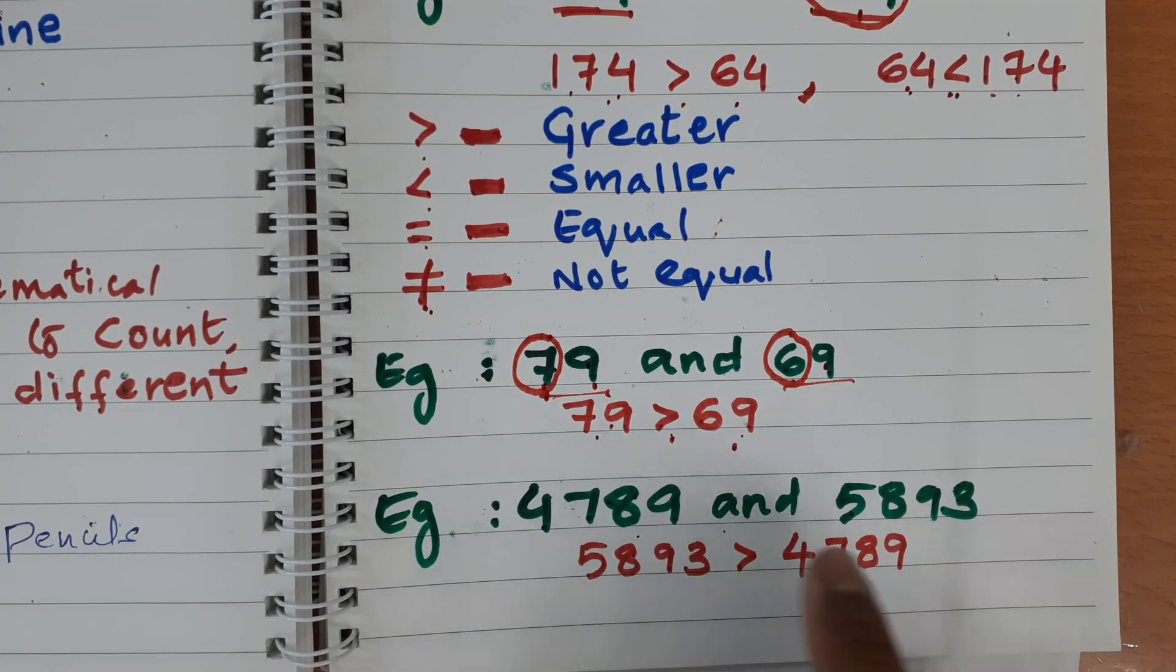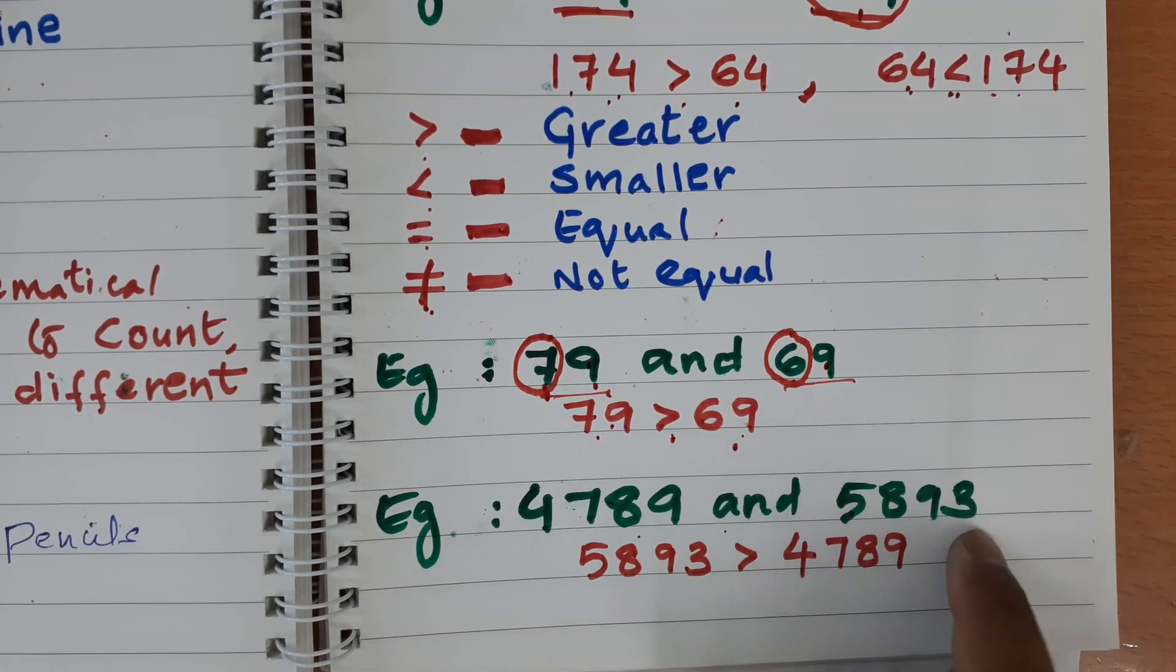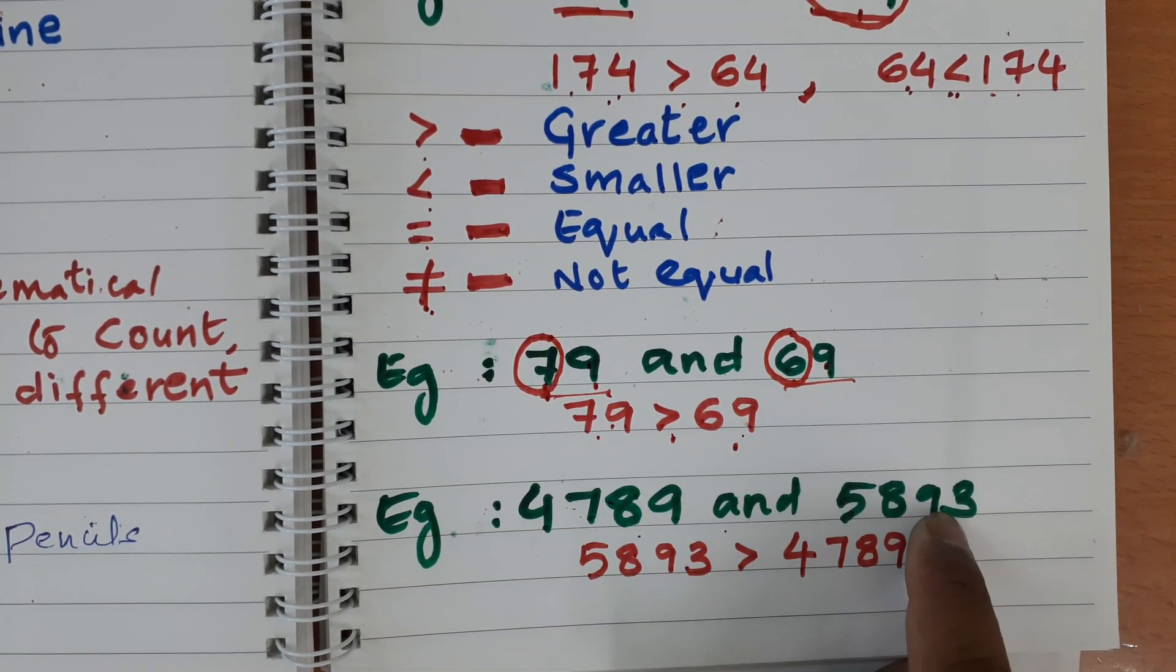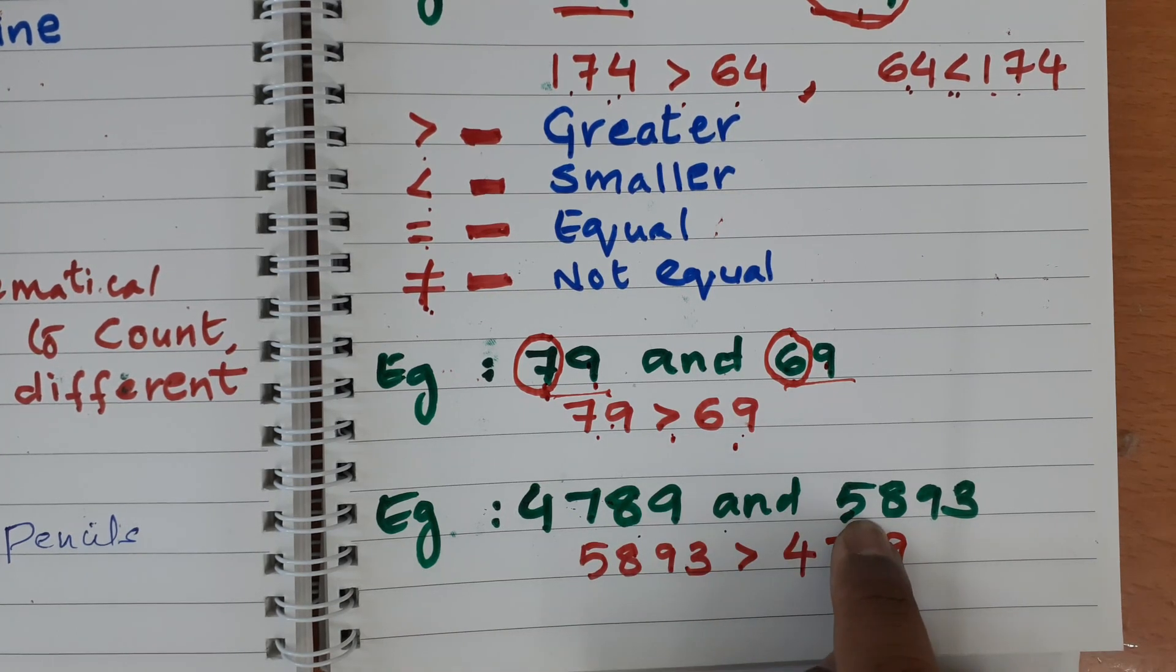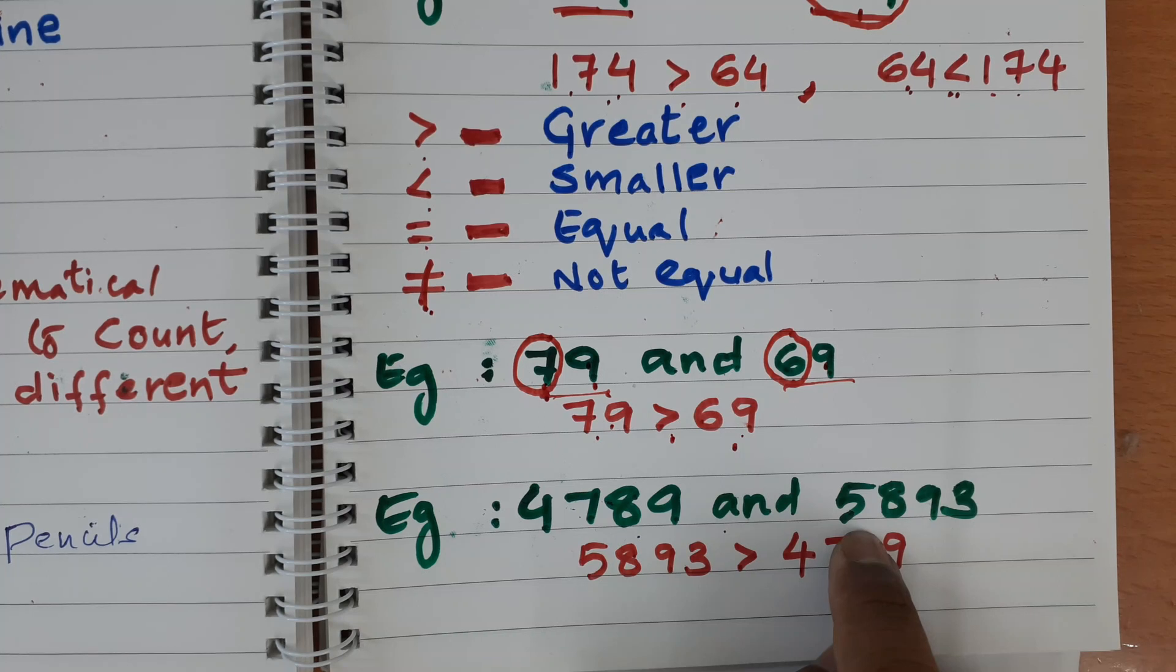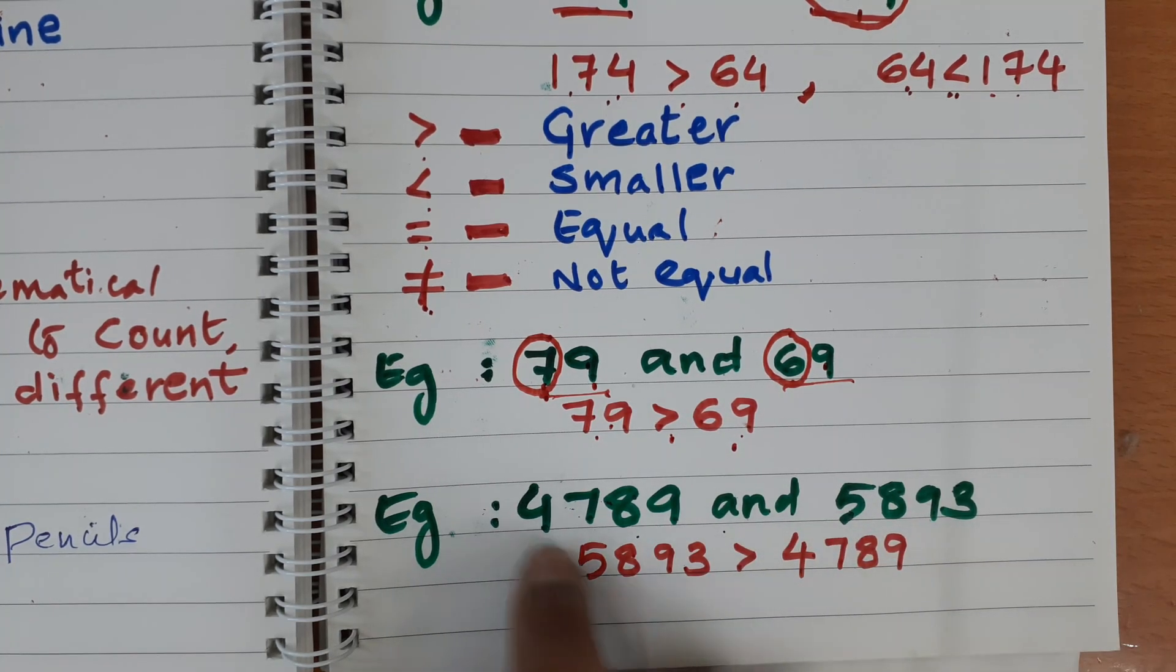4,789, 5,893. These two are 4 digit numbers. If you read this number, if you read this number, this number starts with 4,000. This number starts with 5,000. So of course, clearly we all know that 5,000 is bigger than 4,000.